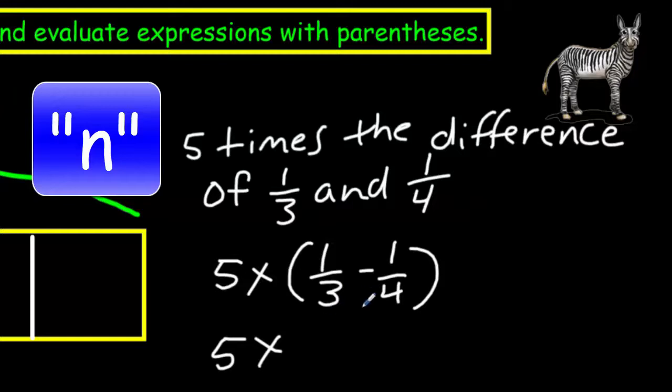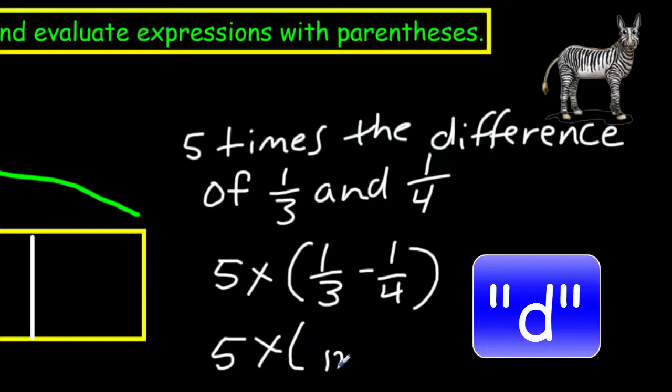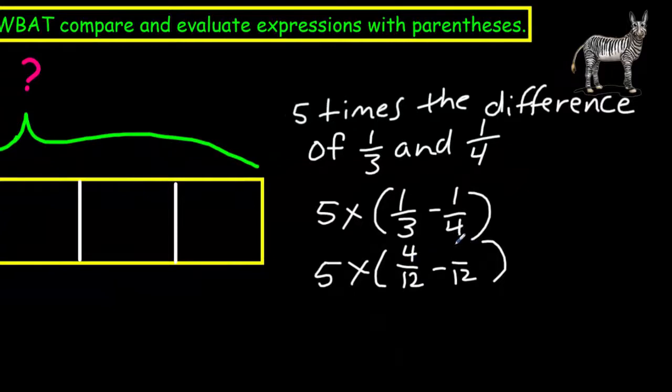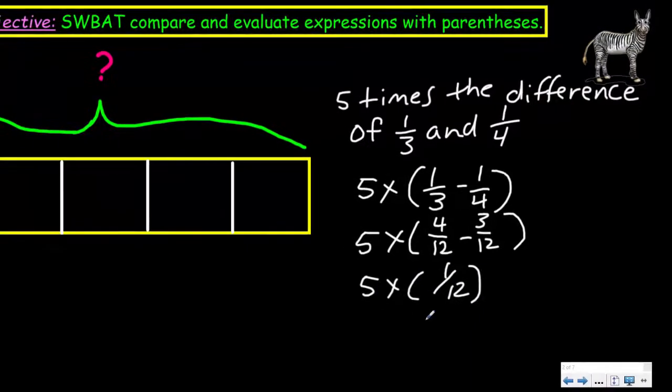Five times, parenthesis, I have to do what's in there first. However, I don't have a common denominator, so I need to get one. I do believe I have a common denominator of 12, because one-third is the same as four-twelfths, and then one-quarter is the same as three-twelfths. Five times, we have four-twelfths minus three-twelfths, one-twelfth, and now that's going to be five-twelfths. Nice.